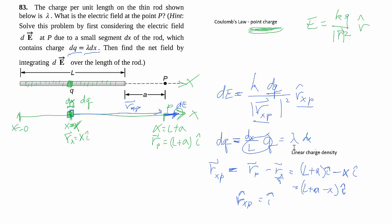And so clearly the unit vector then is just in the i-hat direction. So now all the pieces, we replace all this, let's rewrite that down here. The E, then we have lambda dx over (L plus a minus x) all squared in the i-hat direction.